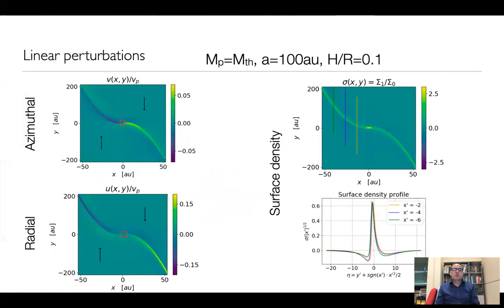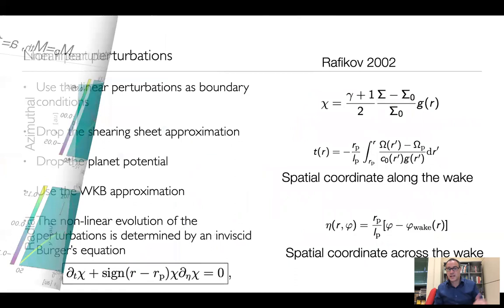So we have done that, this is what we obtain. On the left, you see the azimuthal and radial velocity perturbations for the parameters written here on the top. On the right, you see the surface density. On the bottom right, you see a cut in the surface density profile for the perturbation across three different lines across the wake at three different positions as marked. This is mostly to make sure that we compare with Rafikov's solution. Once we have the linear solution, we move to the nonlinear stage.